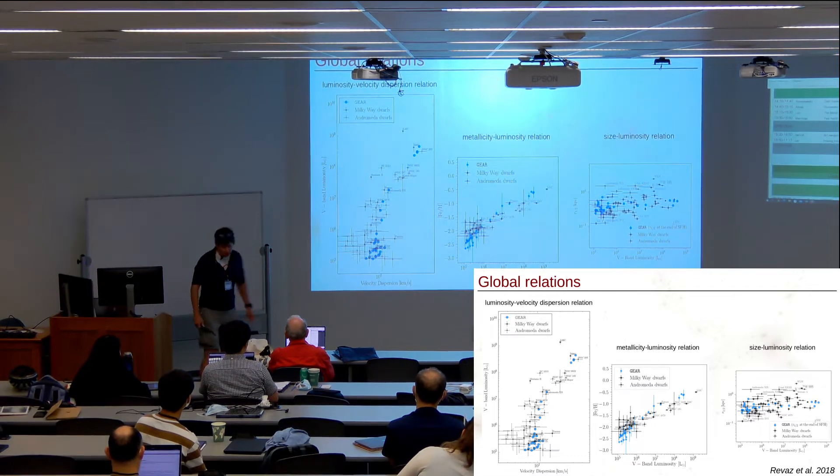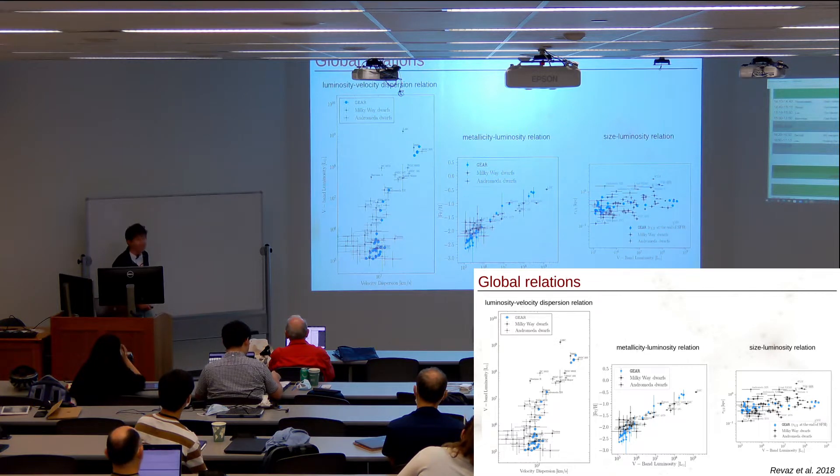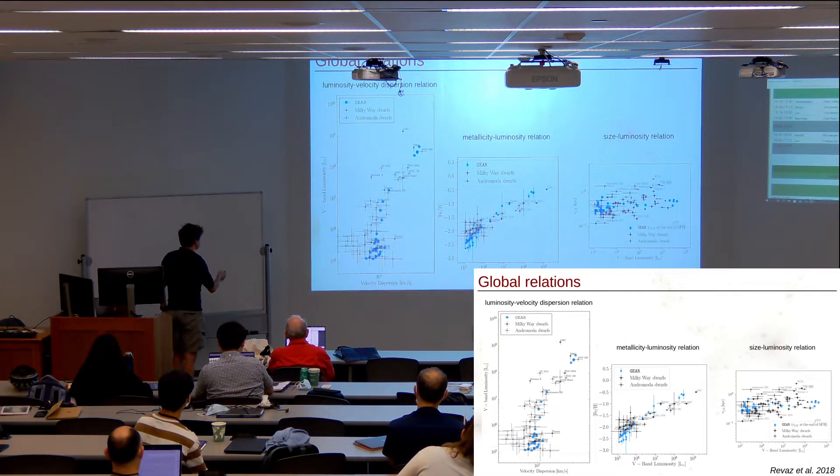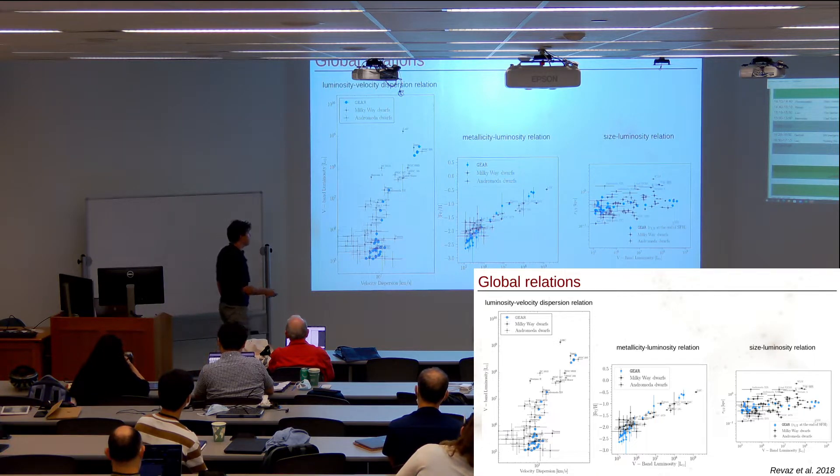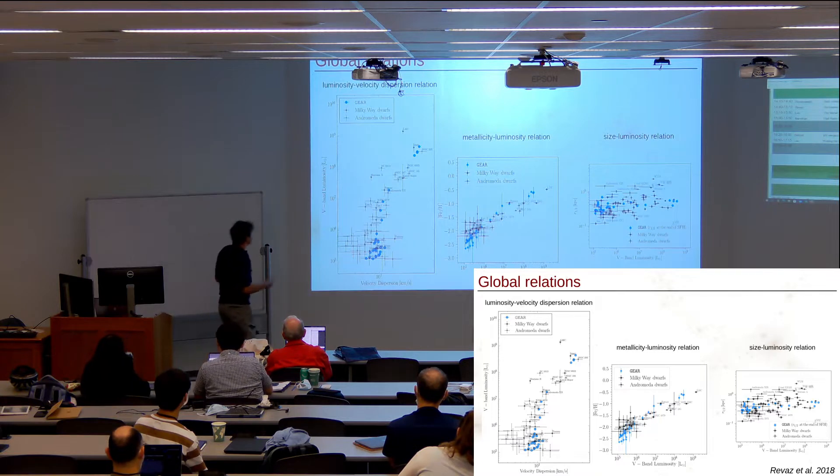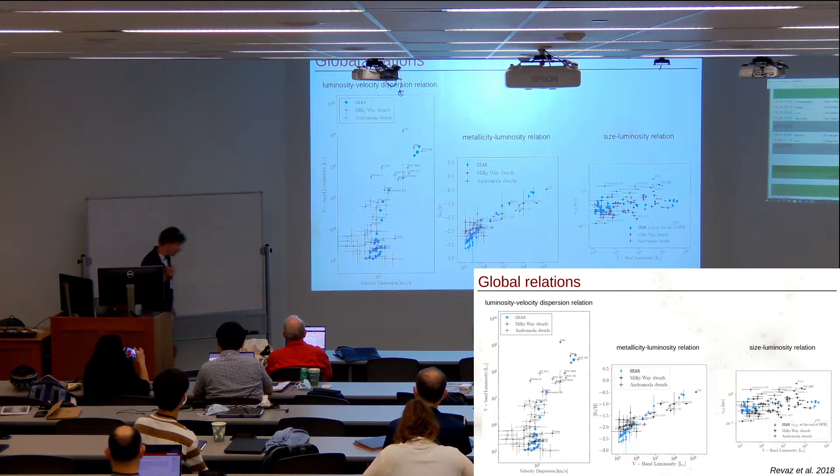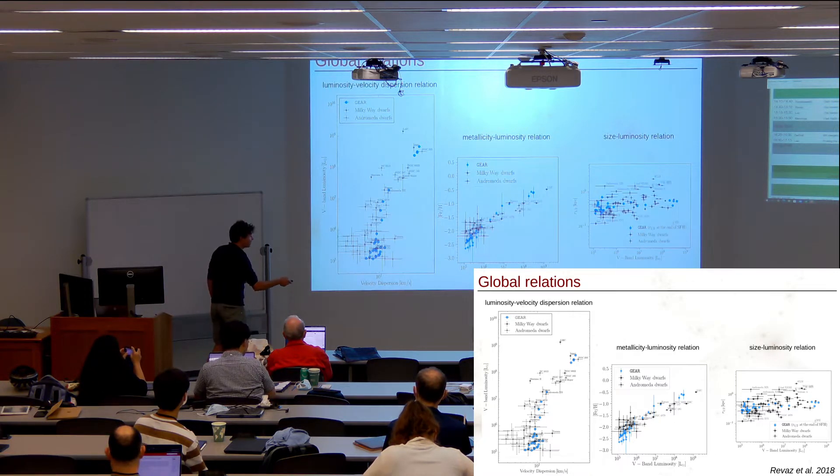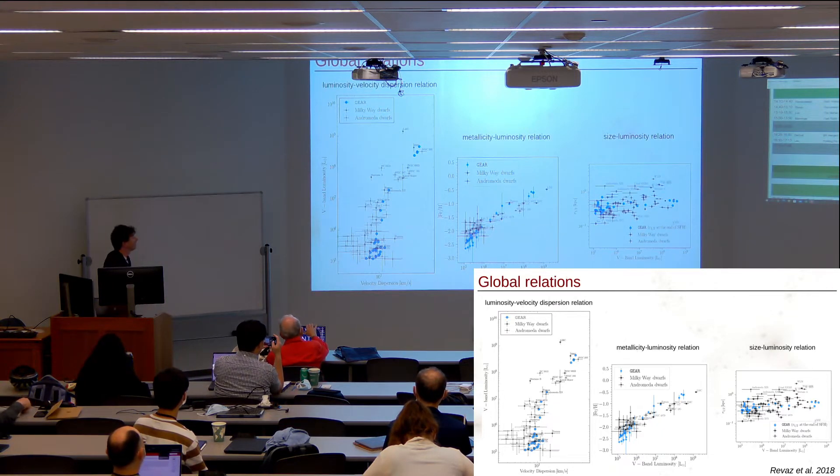The first thing we wanted to check is if they reproduce the well-known scaling relations. Here you have the luminosity as a function of velocity dispersion, the metallicity as a function of luminosity, and the half-light radius as a function of velocity. The data are in black, the blue points are our simulations. We're doing pretty well over four orders of magnitude. However, the scatter is very low compared to observations, something that will have to be understood in the future.